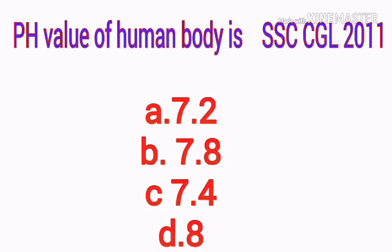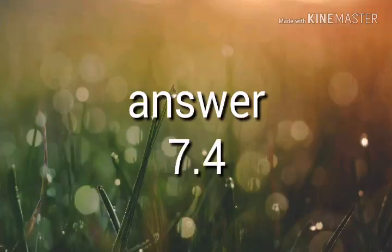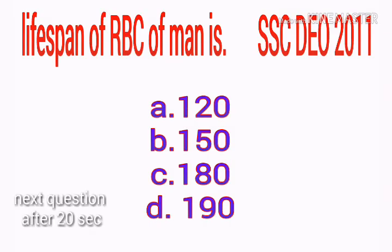What is the pH value of human blood? Options: 7.2, 7.8, 7.4, or 8. Your answer is 7.4.